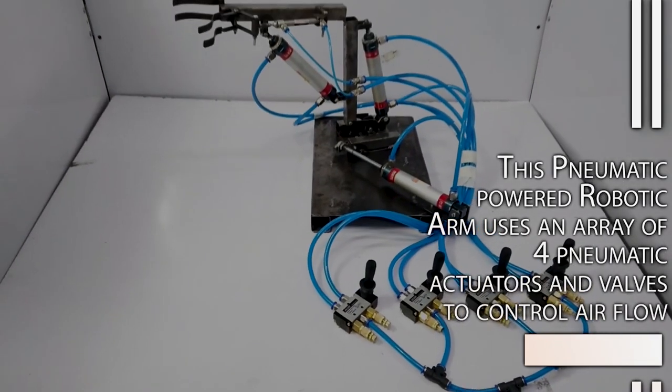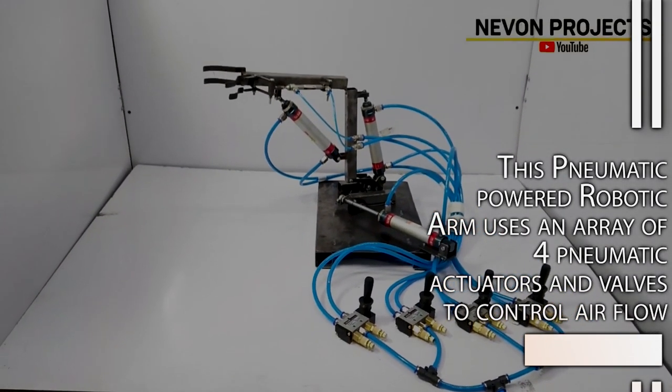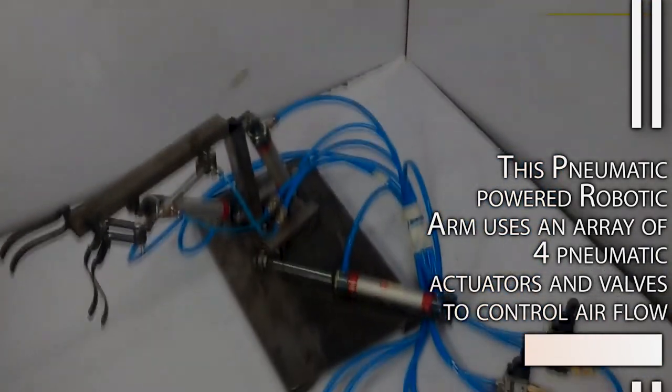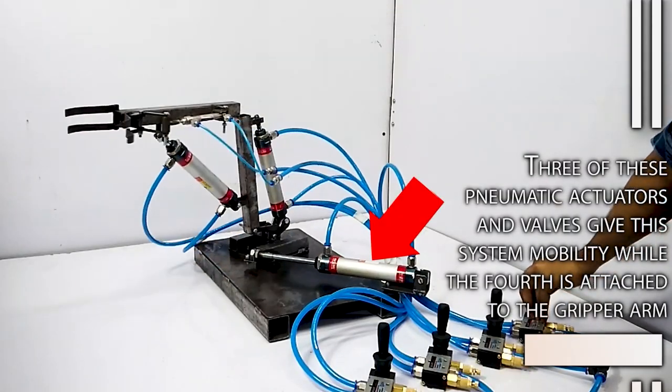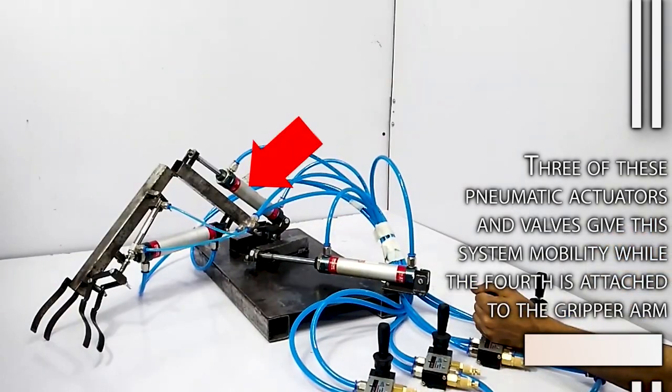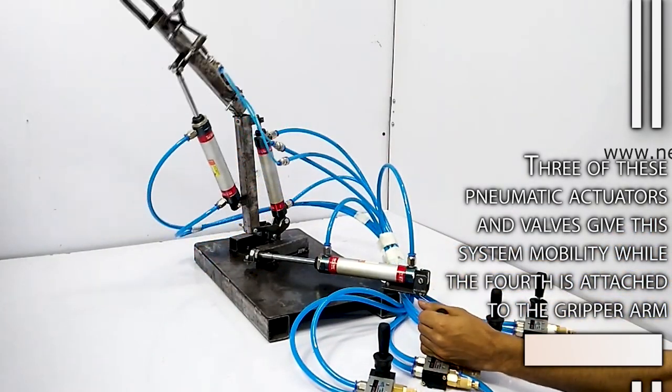This pneumatic powered robotic arm uses an array of four pneumatic actuators and valves to control airflow. Three of these pneumatic actuators and valves give the system mobility, while the fourth is attached to the gripper arm.